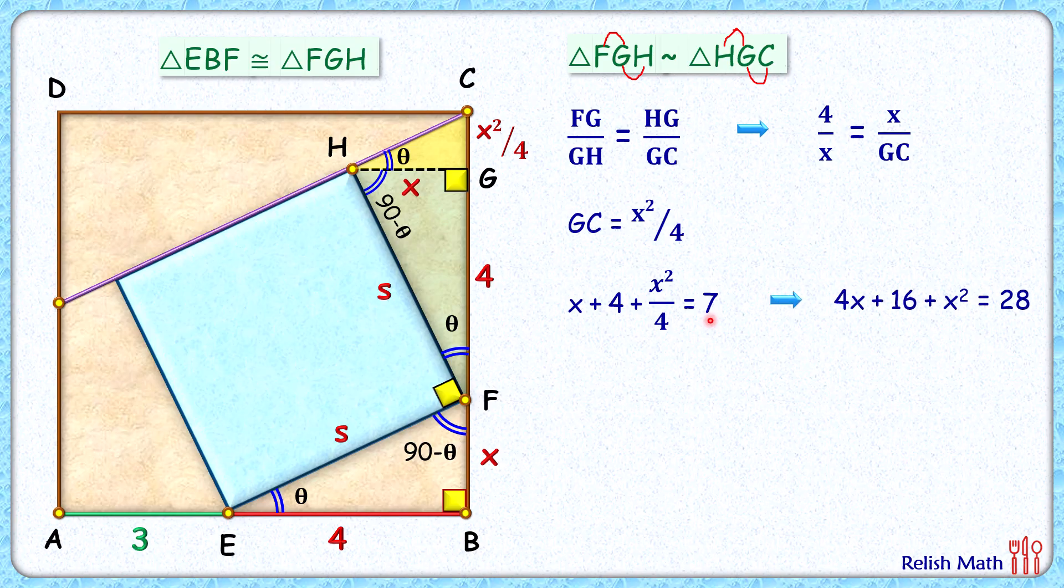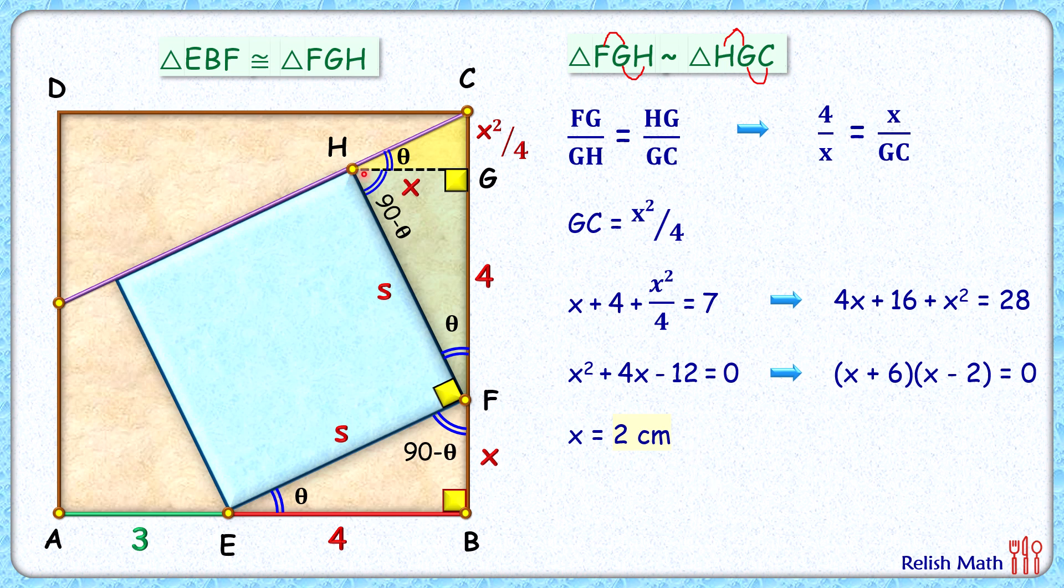Multiplying the full equation by 4 and now simplifying it, taking everything to the left-hand side, we get a quadratic in terms of x. Solving it by splitting the middle term, plus 4 will split to get product as negative 12, so we'll split it as plus 6 and minus 2. Now here we are getting either x as negative 6 centimeters or 2 centimeters. So ignoring the negative value, we'll get x as 2 centimeters.